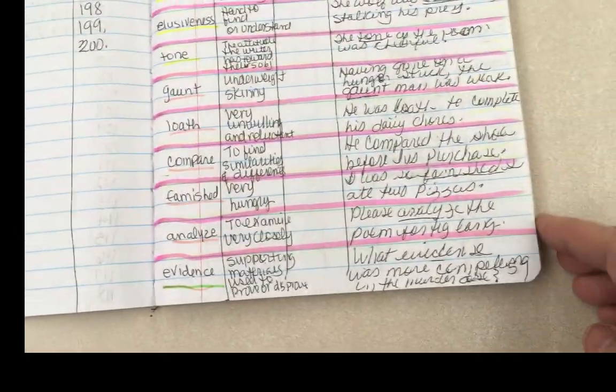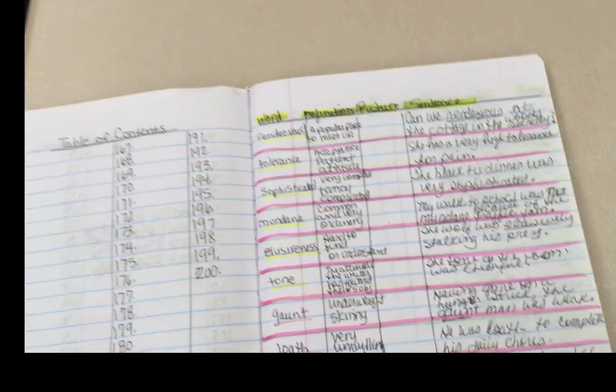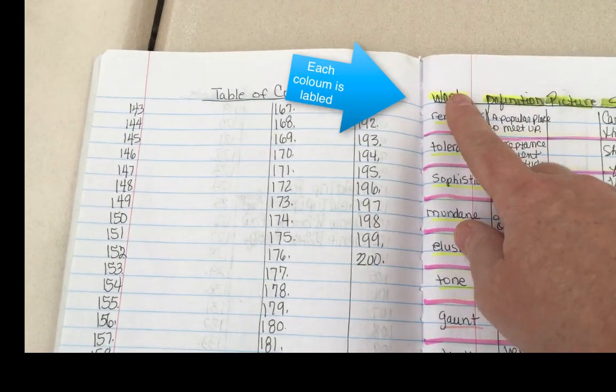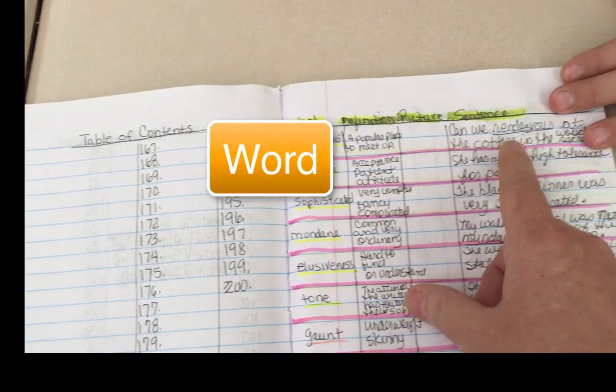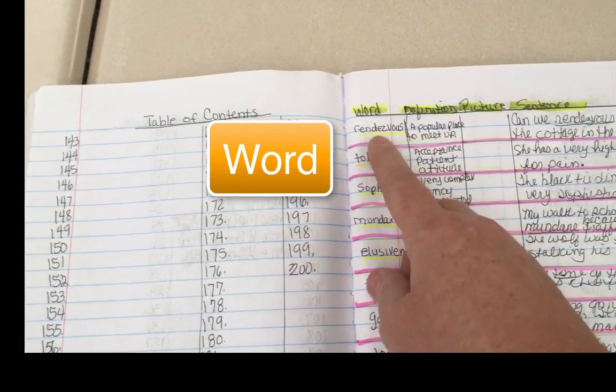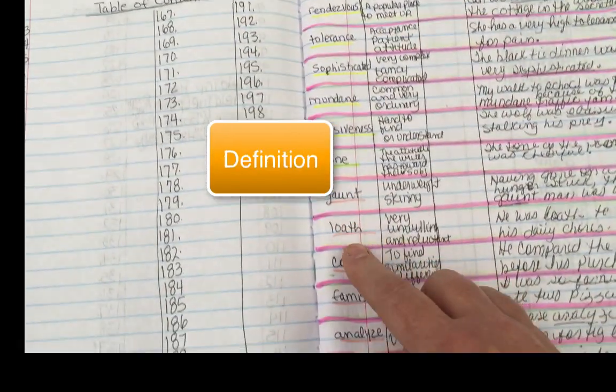Then I start on the vocabulary, the very next page on page five. It starts the vocabulary and here I have four columns. I start with word, definition, picture, and then the example sentence using the word. So here are the vocabulary words from the very beginning.